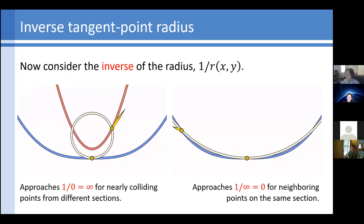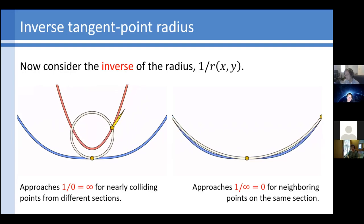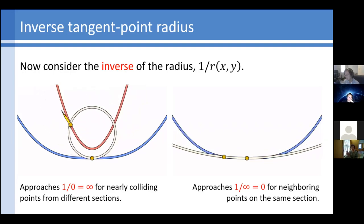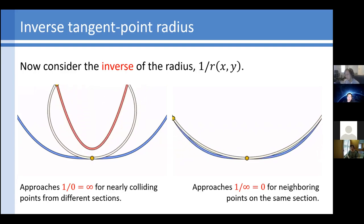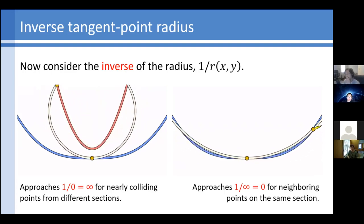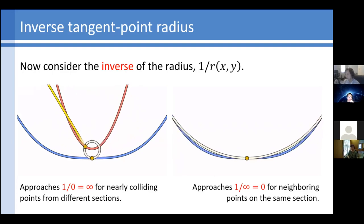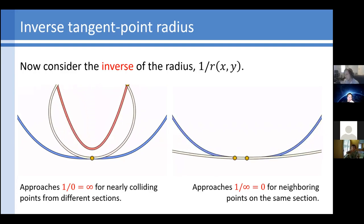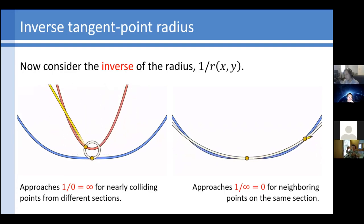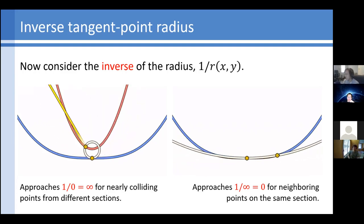Question: does this mean that even if a point is on the same curve, if it's a bit far away, it will still have some potential energy? That's right — it will still contribute some potential energy from points that are farther away, but not immediate neighbors. The important part is that the energy goes to zero as you get closer, so you don't get infinite blow up. And yes, if there's another curve that is close to you, that energy will dominate, so the energy from farther points on the same curve doesn't really matter.